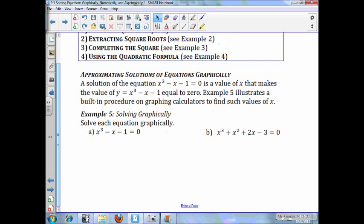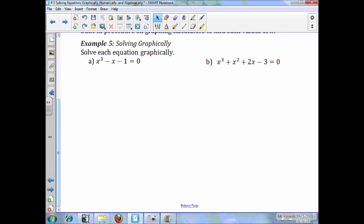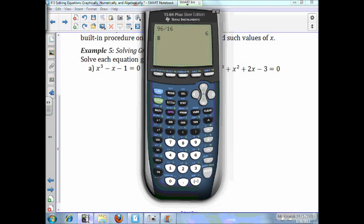So, solve each equation graphically. So, again, we're going to put this into our calculator. x to the third minus x minus 1. We're going to graph that. As you can see by the graph, there is only one answer. So, we're going to do second trace. Use our zero finder. Here's my left bound.